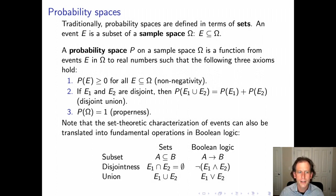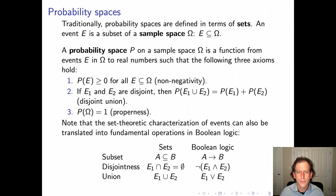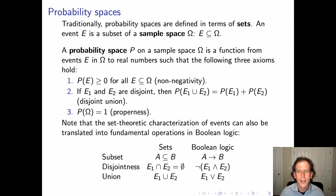These are set-theoretic definitions, but we can also translate them into Boolean logic. The subset relationship is equivalent to implication. Disjointness — intersection being the empty set — is equivalent to saying both events cannot hold simultaneously. Union is equivalent to disjunction. We'll move throughout the course back and forth between these set-theoretic and logical characterizations, which turns out to be very convenient.